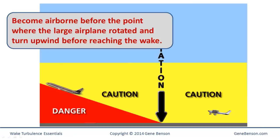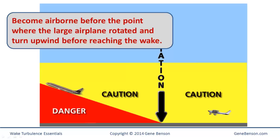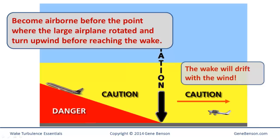When taking off behind a large airplane, we must make sure we can become airborne well before the point where the large airplane rotated, and then turn away — preferably upwind — before we cross the flight path of the large airplane. Remember that the wake will move with the wind, so it will be moving toward the departure end of the runway.